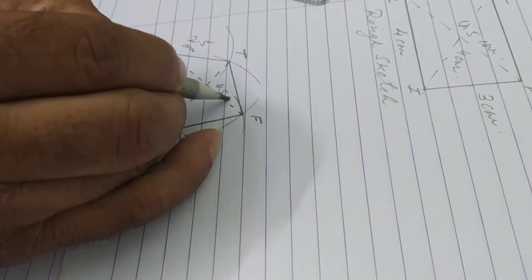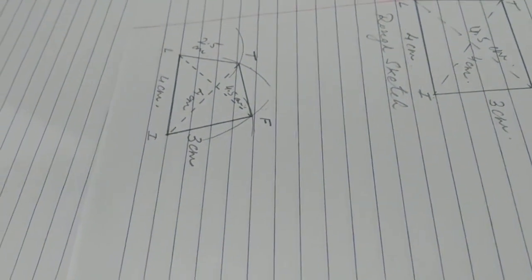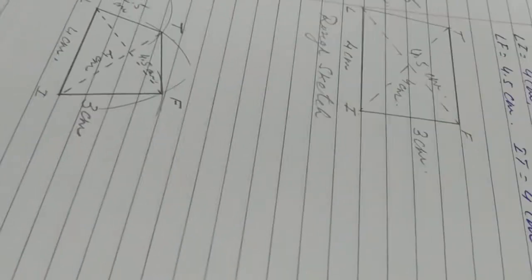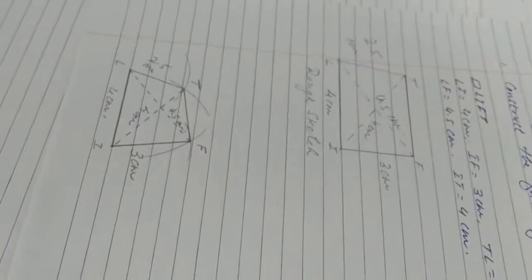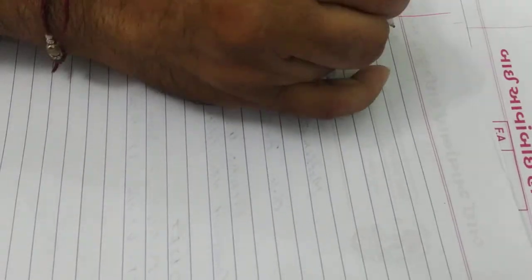So, all of you understood how to construct? Good. Thank you. Please write steps of construction yourself. Now, let's go with the next quadrilateral GOLD.